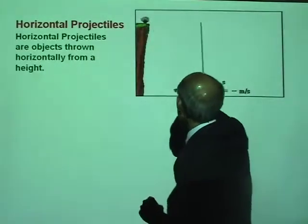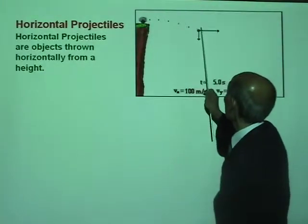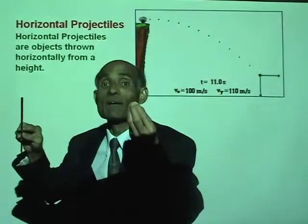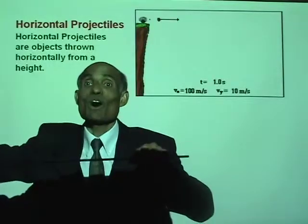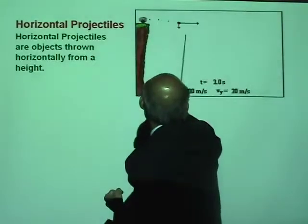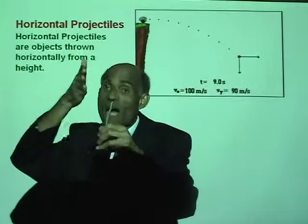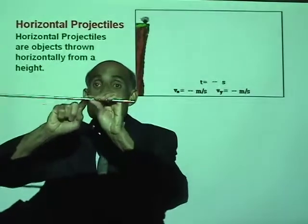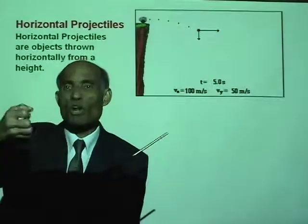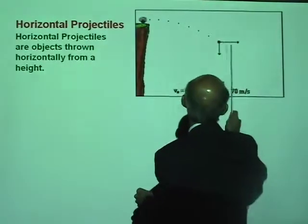Look at the arrows on the cannonball. The horizontal arrow is not changing — the horizontal motion will not change because there is no horizontal force on the ball. Whereas the vertical motion, the speed vertically, is increasing. The ball has both a horizontal motion and a vertical motion. The horizontal motion is not affected because there is no horizontal force. There is nothing pulling or pushing that cannonball horizontally, so its horizontal motion remains constant.